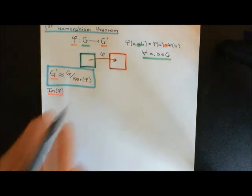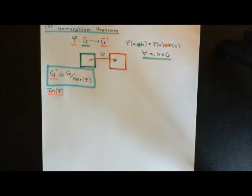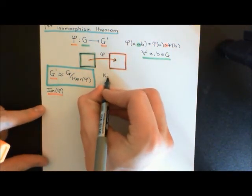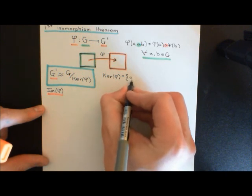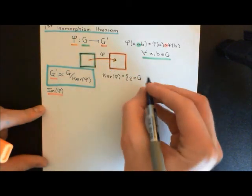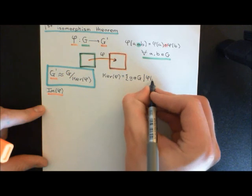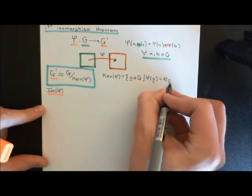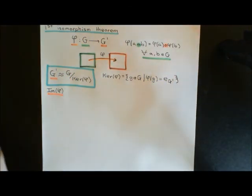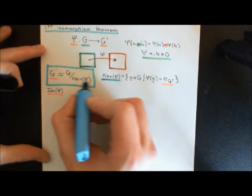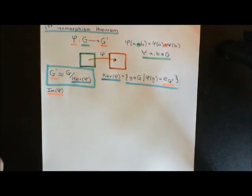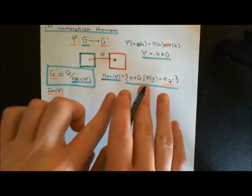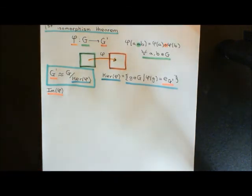So what does this actually mean? Let me just remind you of what the kernel of a homomorphism is — we defined this in the video on group homomorphisms but I'll go over it again as it's an incredibly important concept. The kernel of the homomorphism means all elements little g in the domain group capital G such that phi of little g equals the identity element in G prime — that's my notation E subscript G prime. So the kernel means all elements in the domain group which are mapped onto the identity element in G prime by phi.